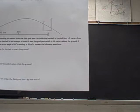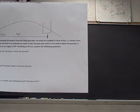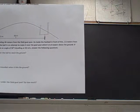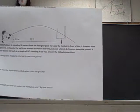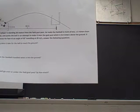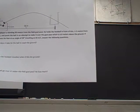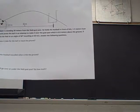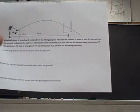If the ball leaves his foot at an angle of 50 degrees traveling at 20 meters per second, answer the following questions: how long does it take for the ball to reach the ground, how far has the football traveled when it hits the ground, and did the football go over or under the field goal post and by how much.